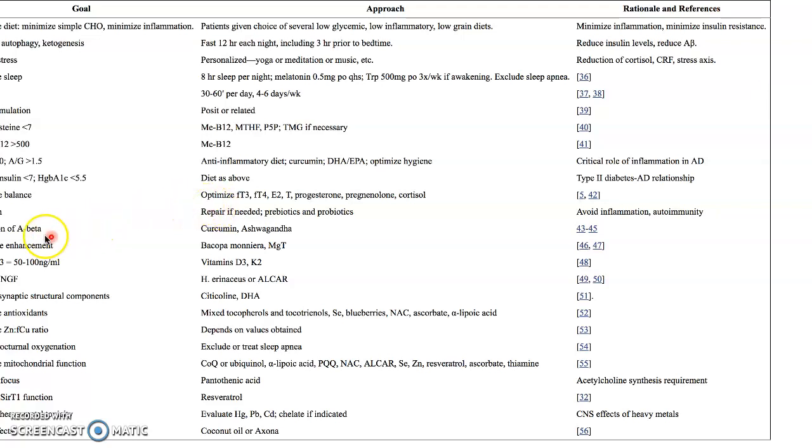Reduction of beta amyloid plaques: Curcumin is the active ingredient in turmeric, which is in curry spice. The best way to take turmeric is with black pepper because we don't absorb very much curcumin without piperine or black pepper to help us absorb it.